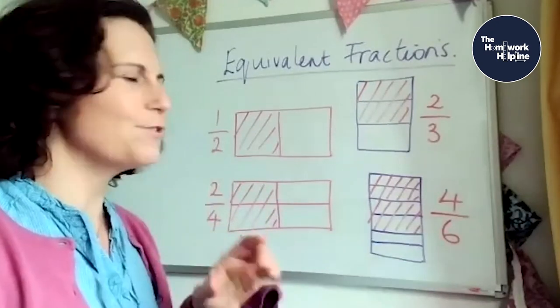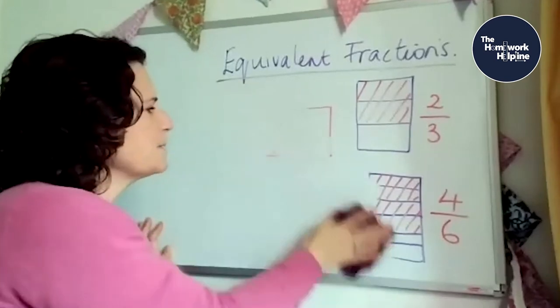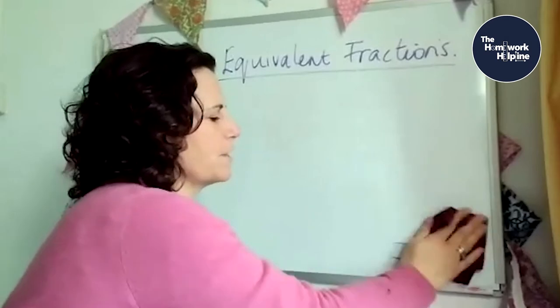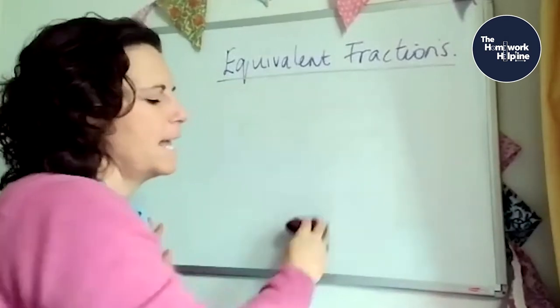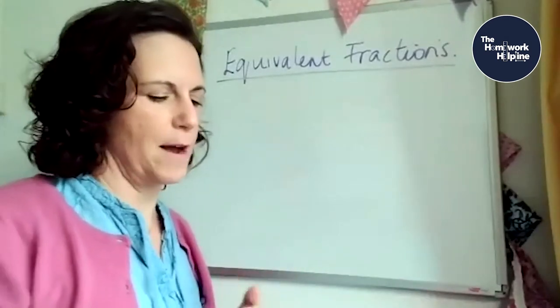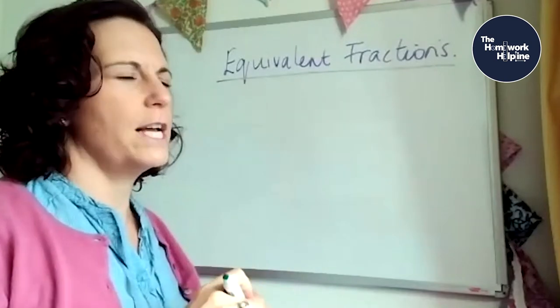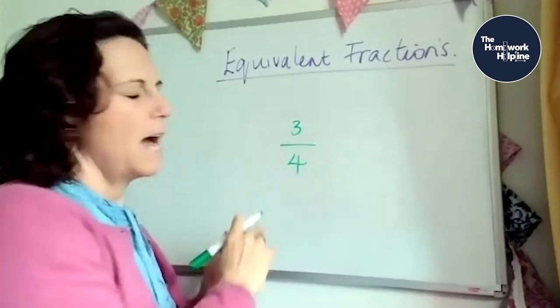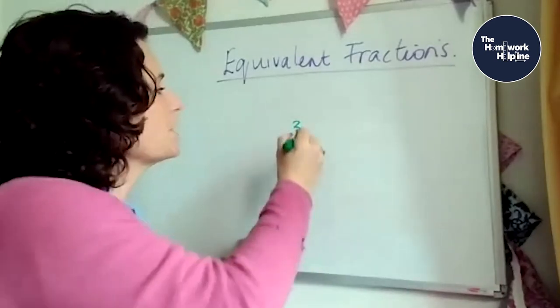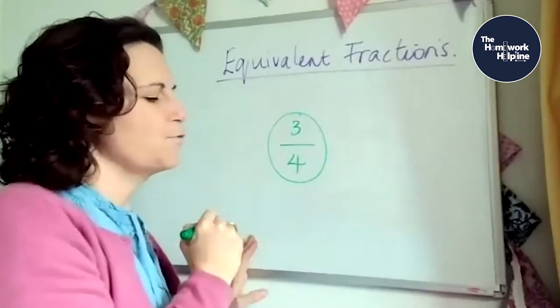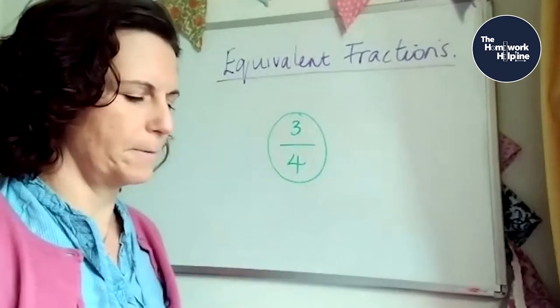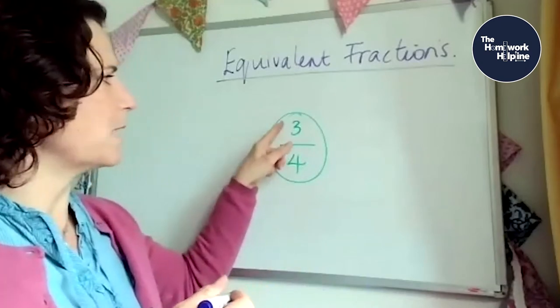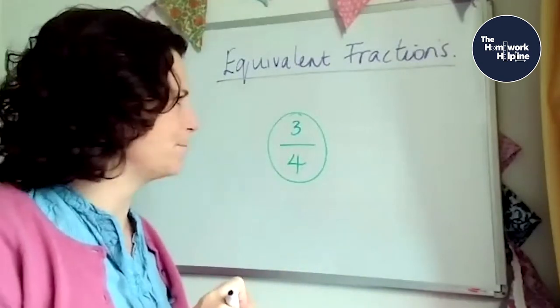So what I'd like you to do in your books or on a nice piece of paper is, you can get your coloured pencils out. This is quite a colourful thing to do. And we're going to make fraction families. So let's start with three quarters. And we're not going to do this with pictures, we're just going to do it with numbers, but we're going to apply the same rule to each one.